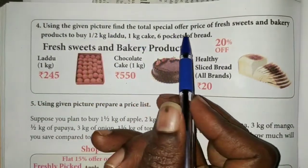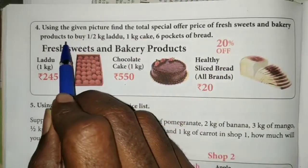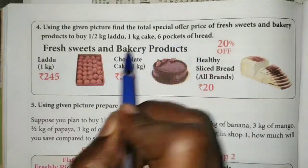Using the given picture, find the total special offer price of fresh sweets and bakery products to buy half cage laddu, 1 cage of cake, and 6 packets of bread.